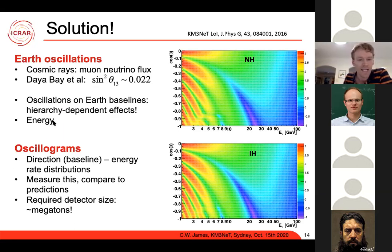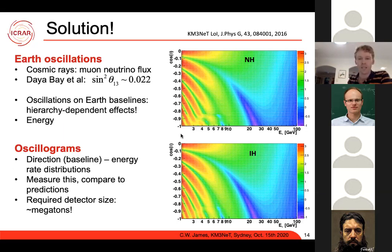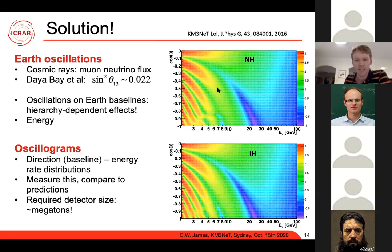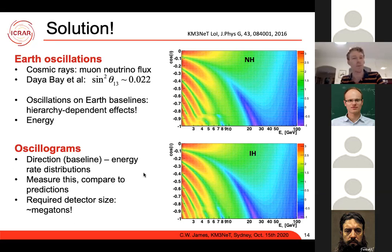In the normal hierarchy, mass state 3 is heavier than 2, which is heavier than 1. In the inverted hierarchy, mass states 1 and 2 are heavier than mass state 3 by a large amount. Over Earth baselines, once theta_{13} was measured at about 0.022, you can get mass-dependent effects on oscillations that differ between hierarchies. Oscillograms show the probability of a muon neutrino remaining a muon neutrino as a function of energy (2–100 GeV) and cosine zenith angle. Measuring the difference between these two plots typically requires a detector of megaton size.